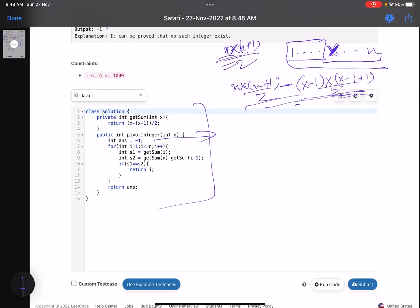Initially, my answer is -1. Then I iterate where i is my pivot number. The pivot can go from 1 to n. I get the sum of first i elements using the formula i into i plus 1 by 2, and then get the sum of i to n, which is sum of n numbers minus sum of i minus 1 numbers. If these two are equal, return i. If you're not able to find a pivot number, return -1.